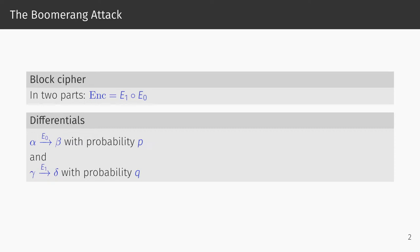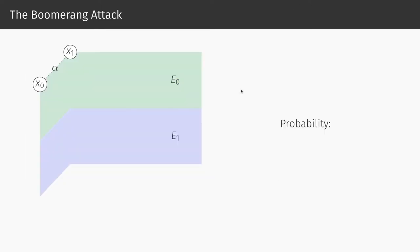We assume that we can split the block cipher into two parts, a top part E0 and a bottom part E1, and that we have a sufficiently good differential for each part. The first differential over the top part maps a difference alpha to a difference beta with probability p, while the second differential maps a difference gamma to a difference delta over the bottom part with probability q. To create the simplest type of boomerang distinguisher, we start with a pair of plaintexts x0 and x1 that have a difference of alpha. Because of the first differential, we expect this pair to be mapped to a difference beta after E0 with probability p.